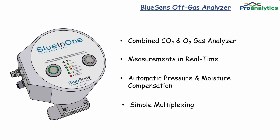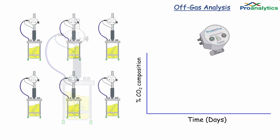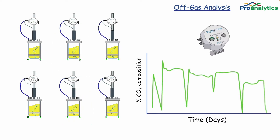Multiplexing is easy, with each vessel getting its own BlueSense off-gas sensor. BlueSense easily attaches to the exhaust line of any vessel, with no time delays, as each unit measures the off-gas directly from the reactor.